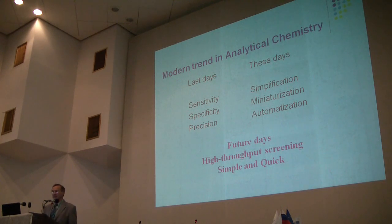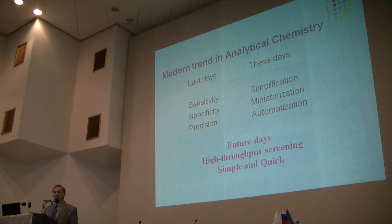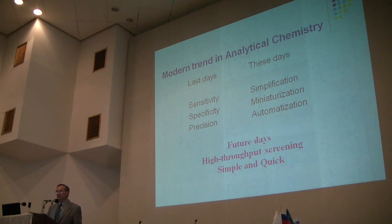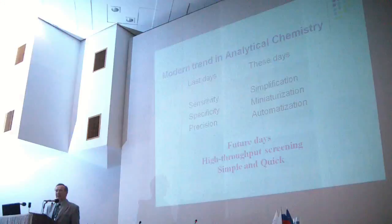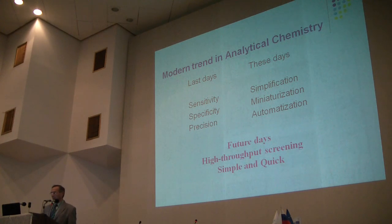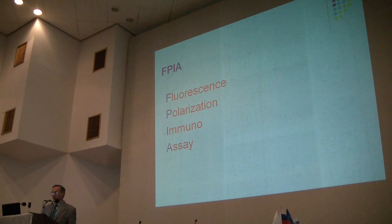Before, we were talking about how precise and sensitive a method was. Now, we are focused on: how possible is it to make it more automated? How possible is it to reduce sample volume? How to reduce reagent usage? And generally, how possible is it to make a high-throughput screening method, because we need to analyze a lot of samples. To solve this sampling problem, one possibility is to make higher-throughput, simpler tests.